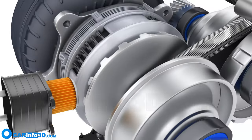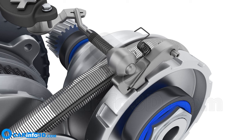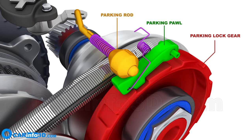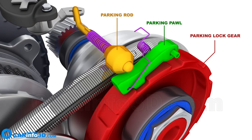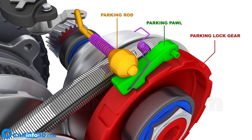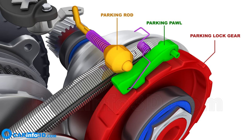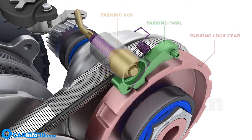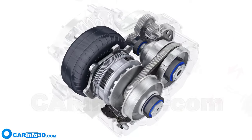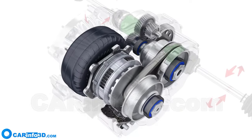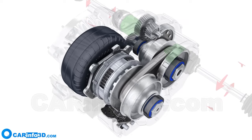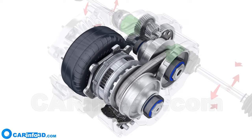The CVT, just like most other designs, employs a mechanical device to lock the transmission when the shift lever is in the park position. In this case, it is a parking lock gear on the CVT's driven pulley. Our review of the fundamental features of a continuously variable transmission has come to an end.